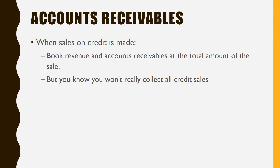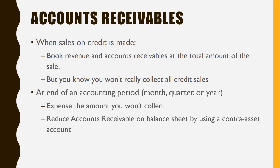We know we really won't collect all of it. If you remember, the definition of an asset is a probable economic benefit, so if we probably won't get it, we really don't want to show it on the balance sheet as an account receivable for the whole amount. So the way we fix this is with one of those adjusting journal entries — we're going to expense the amount that we don't plan to collect, in the year that we made the sale.